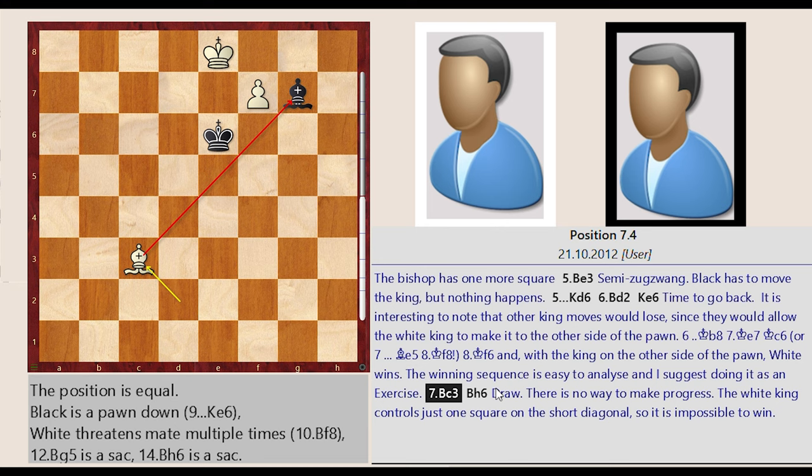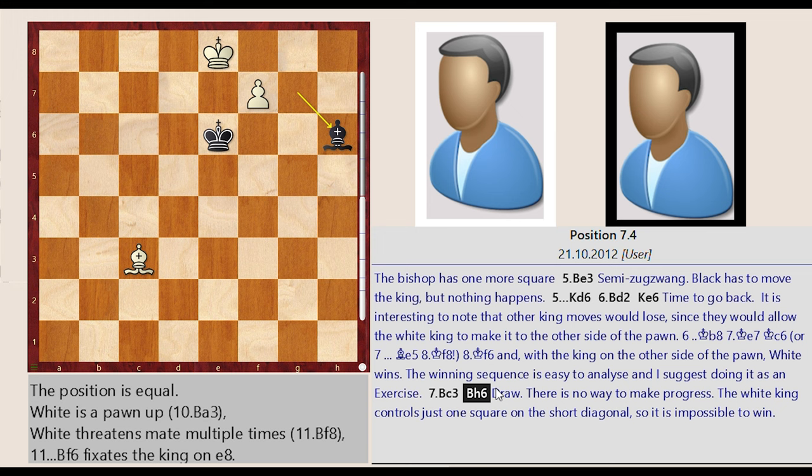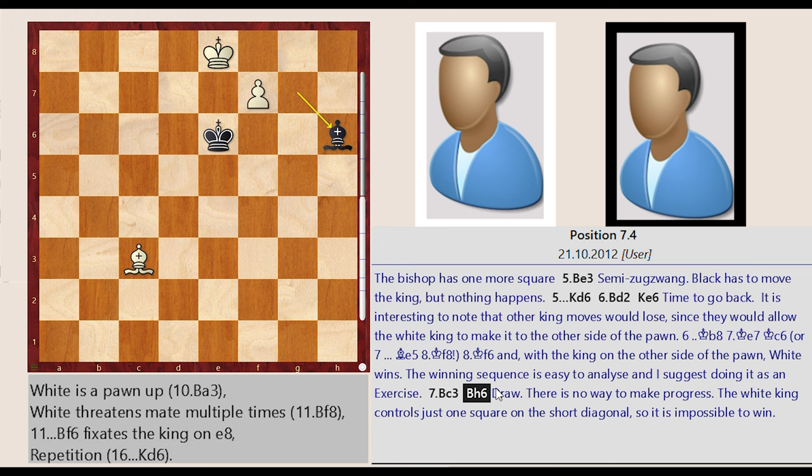Bishop D2 C3. Bishop G7 H6. Draw. There is no way to make progress. The White king controls just one square on the short diagonal, so it is impossible to win.